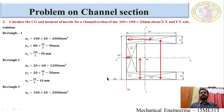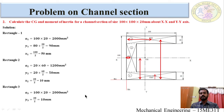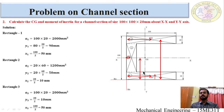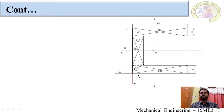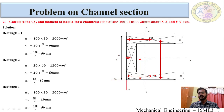Consider rectangle 3. Area A3 = 100 × 20 = 2000 mm². y3 = 20 ÷ 2 = 10 mm. x3, the distance from the reference axis to the center of gravity of the third rectangle, is 100 ÷ 2 = 50 mm.